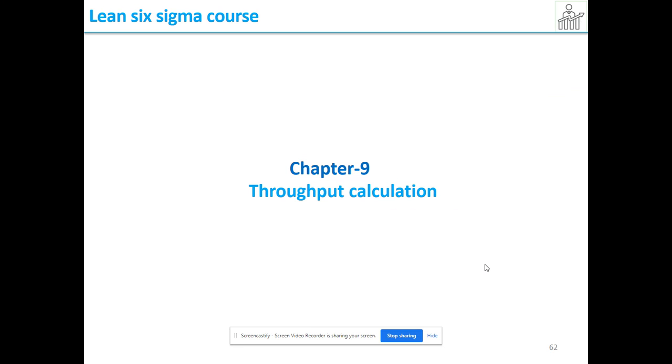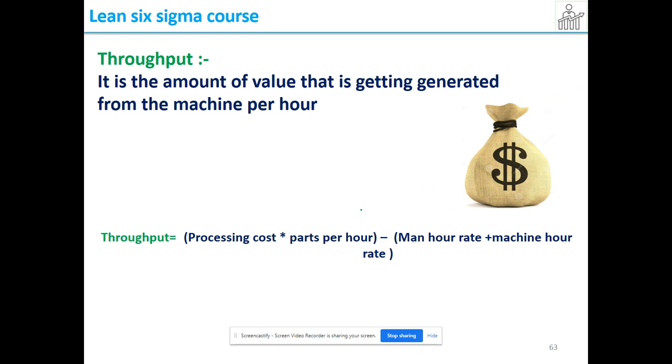We are going to see a throughput calculation. So what is throughput? Throughput is the value that a machine is generating per hour.